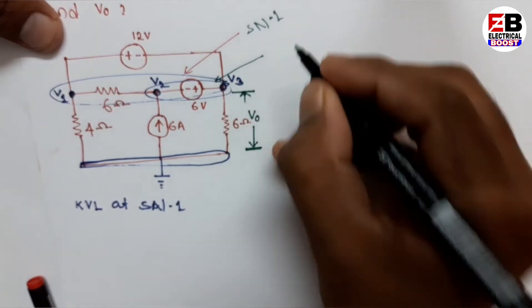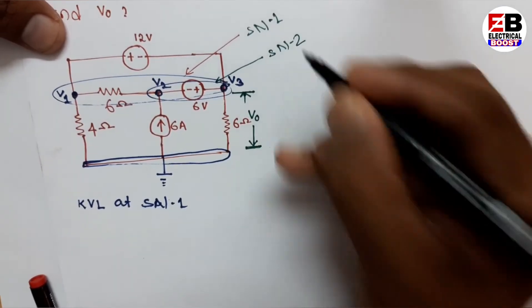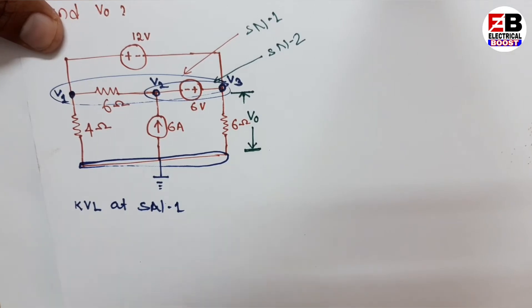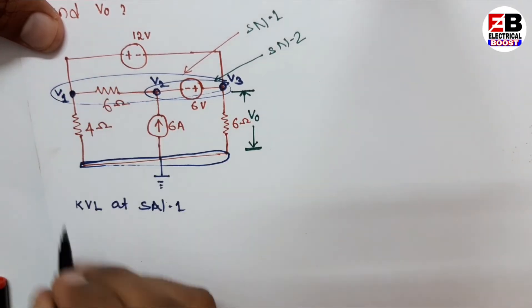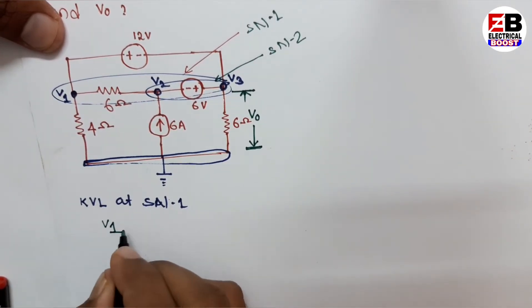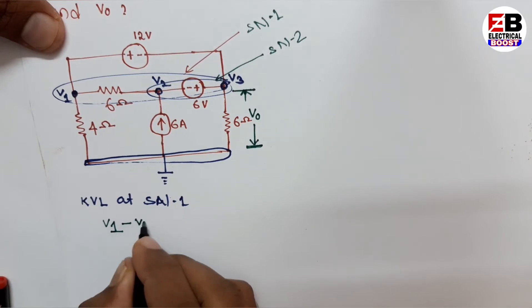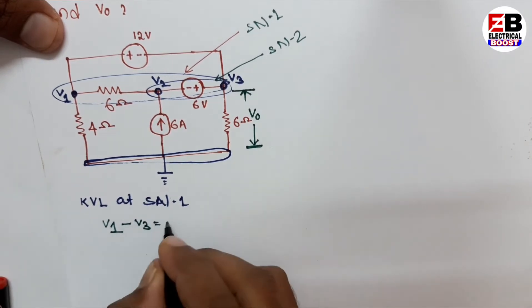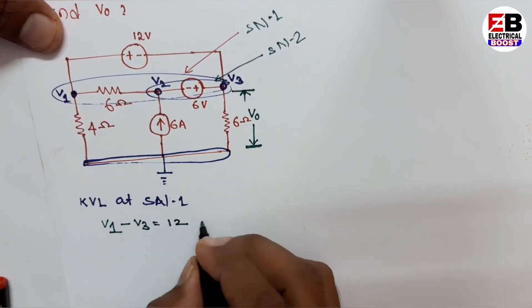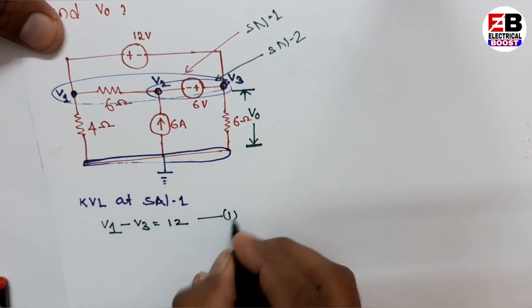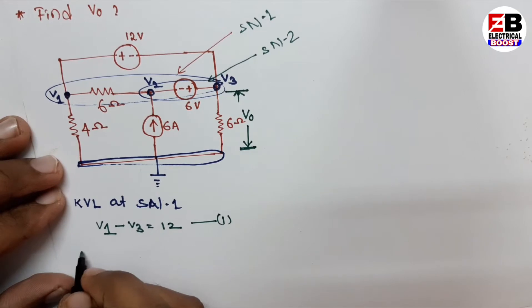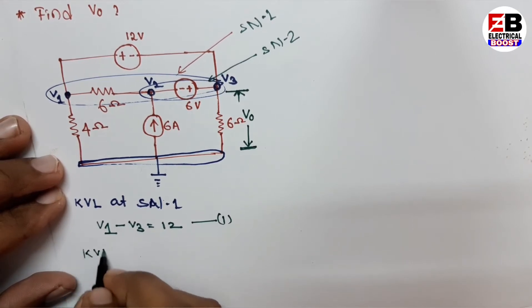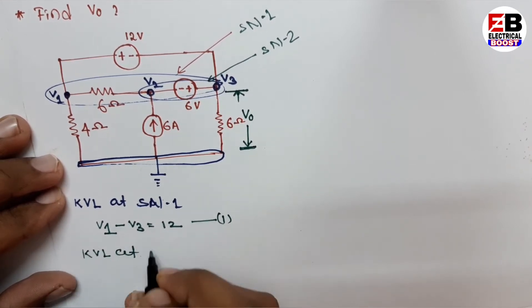At Supernode 1, according to the voltage polarity, we apply KVL. The equation is: V1 minus V3 equals 12. This is our first equation.